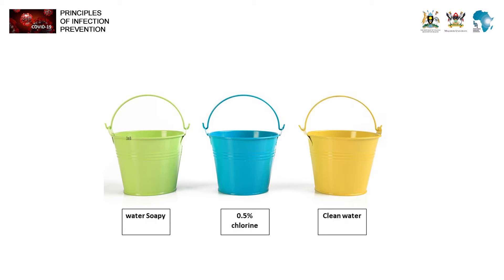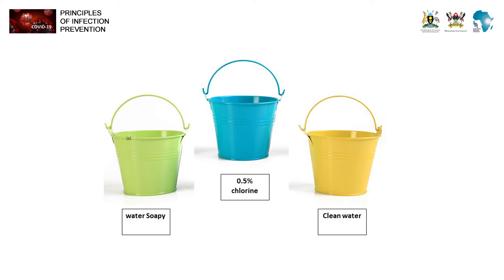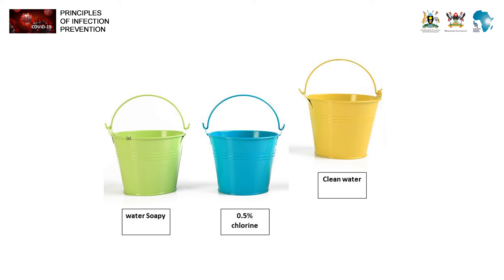The three-bucket system is used to decontaminate medical instruments coming from use in the patient area, whether soiled or not, to remove organic matter. In the first bucket, soap and water are used to wash instruments and remove visible organic matter. In the second bucket, 0.5% chlorine solution is used to soak instruments for 10 minutes. In the third bucket, the instruments are rinsed before being thoroughly dried and taken for sterilization.